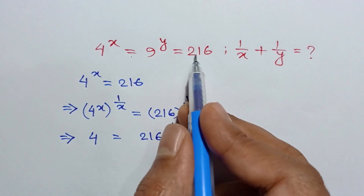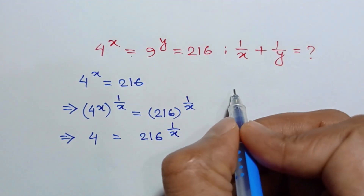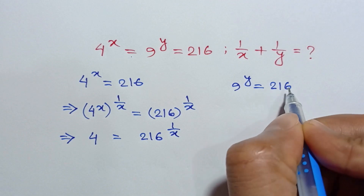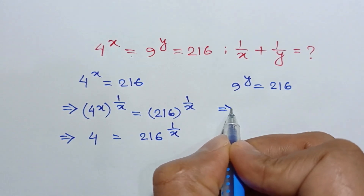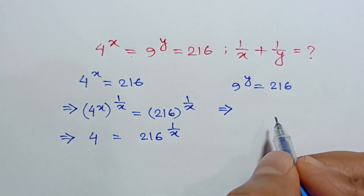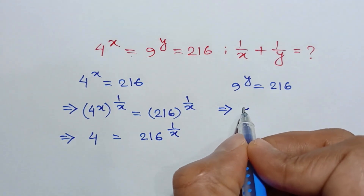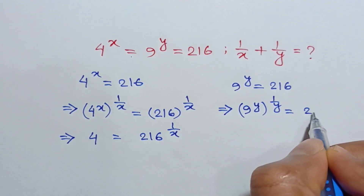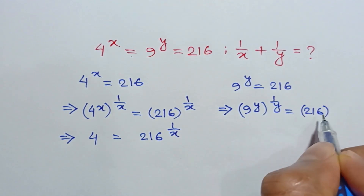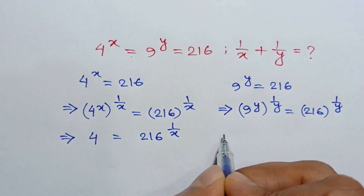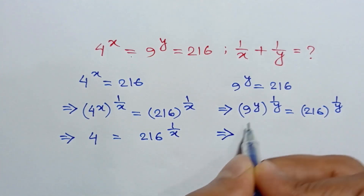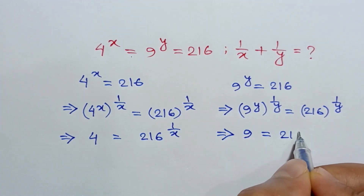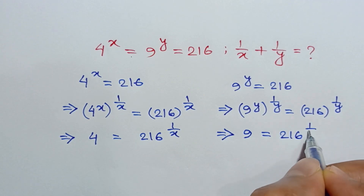Again, 9 to the power y is equal to 216. If we raise both sides to the power 1/y, we will have 9 to the power y, whole to the power 1/y, is equal to 216 to the power 1/y. The y's cancel out, so it will be 9 is equal to 216 to the power 1/y.